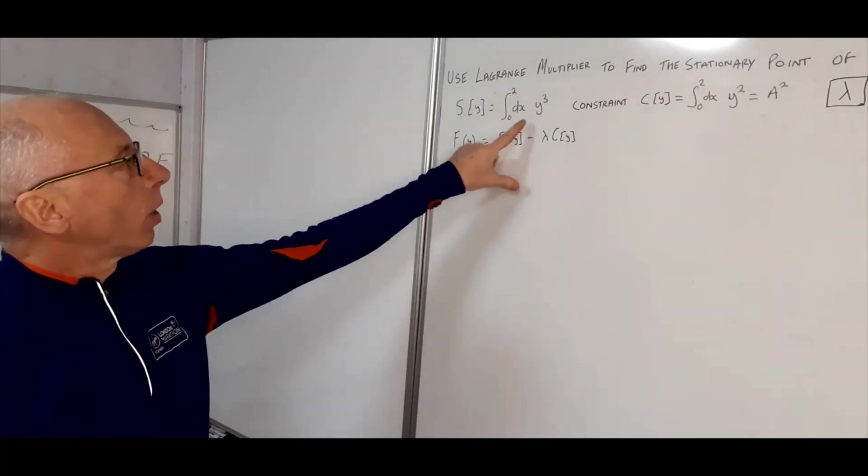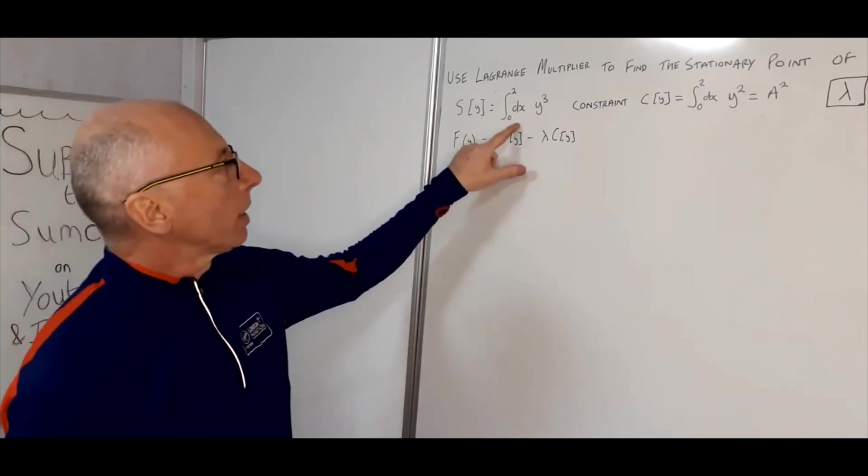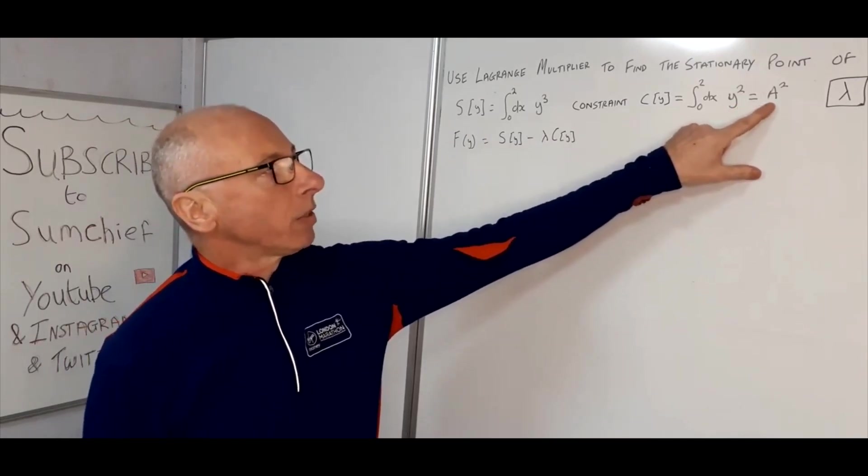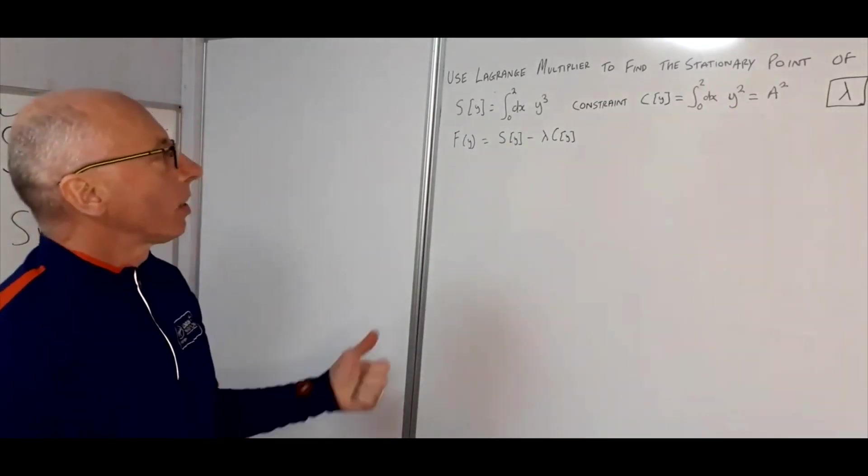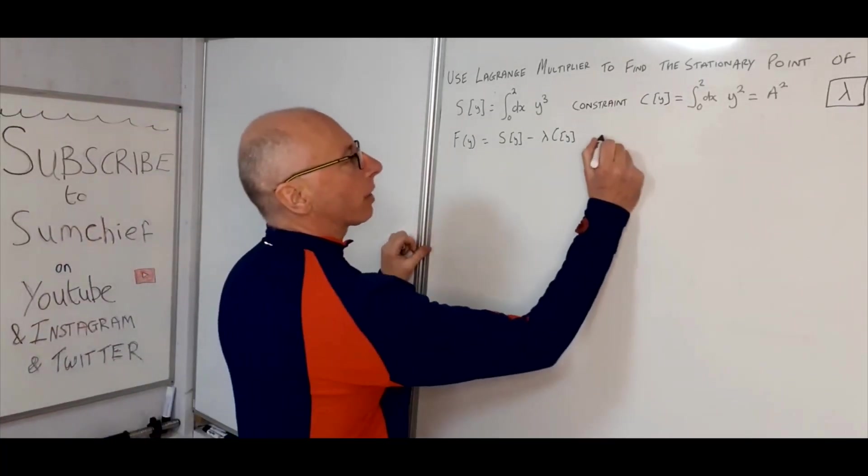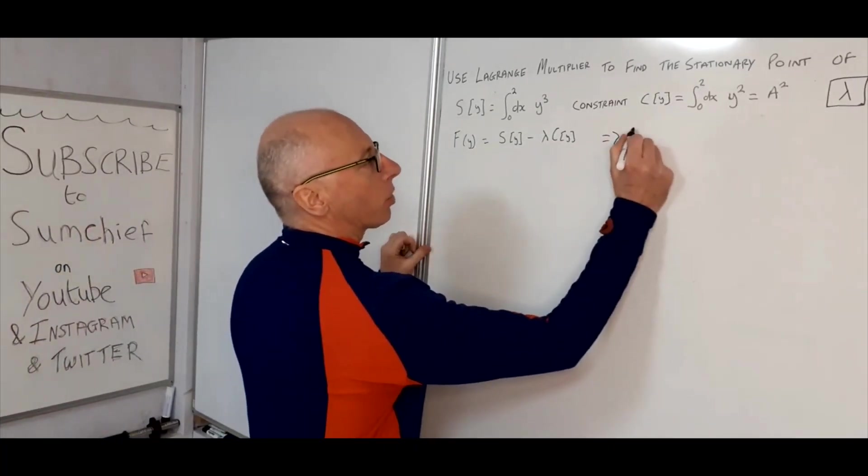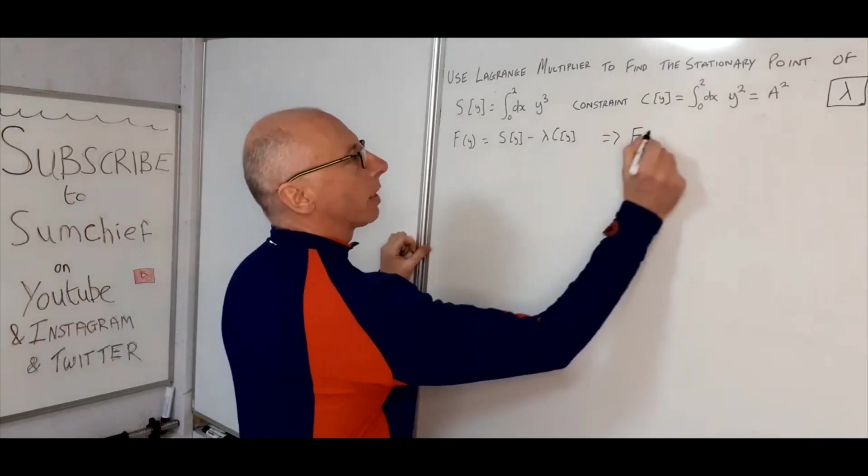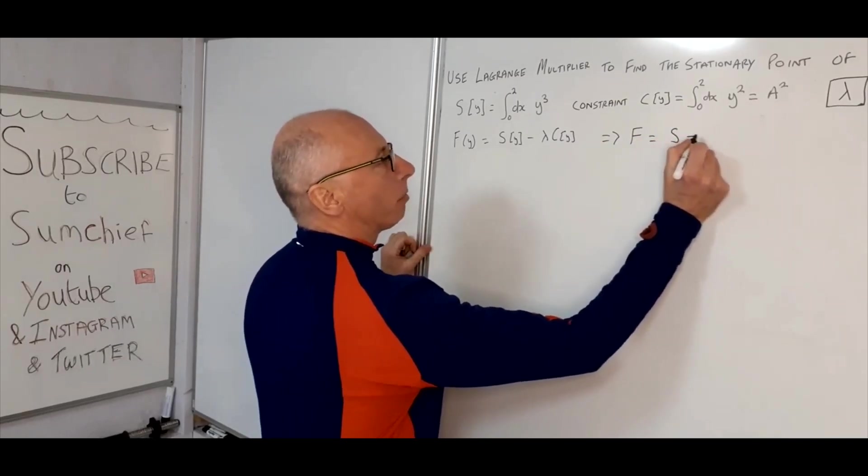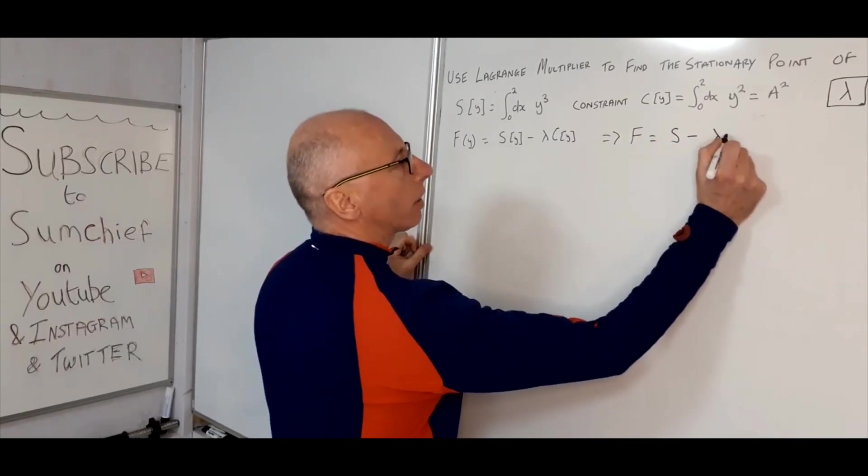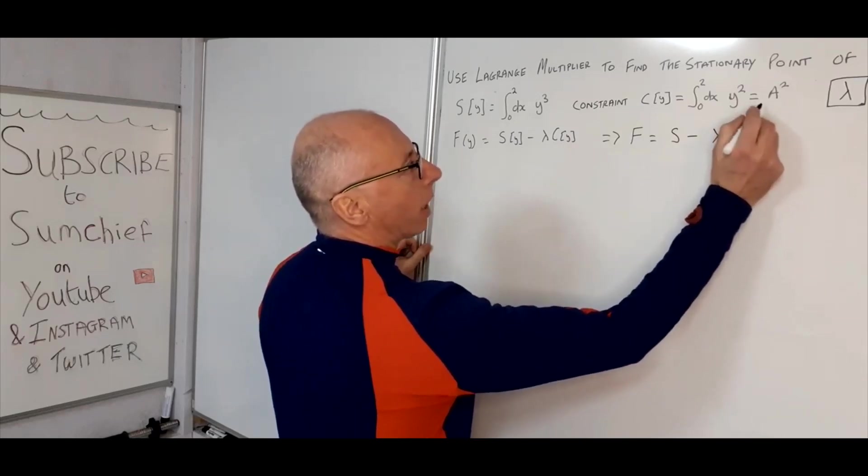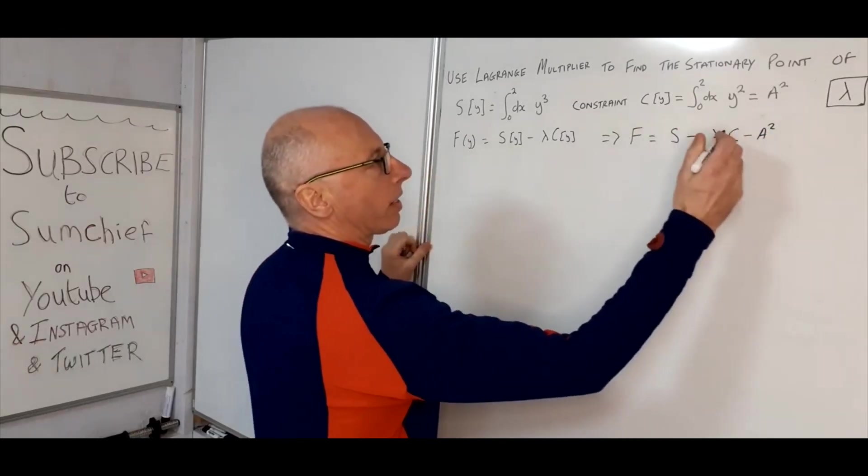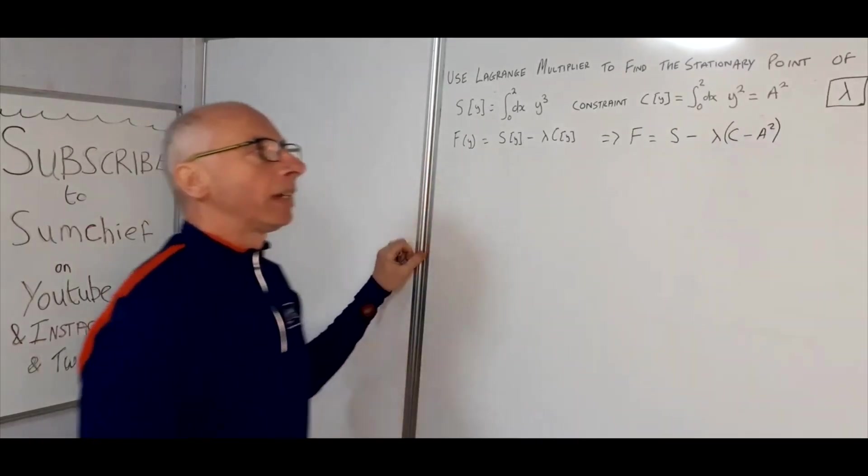So S(Y) we know is Y cubed and it's an integral, and our C(Y) we know is also an integral but we know the value of this integral is A squared. So what we do is now we can rewrite our functional F, and we'll just write it in this method here without using the Y. So everything is a function of Y. So F equals S minus lambda C minus A squared, because we know that this one here is A squared so I'm just going to put that in there like that.